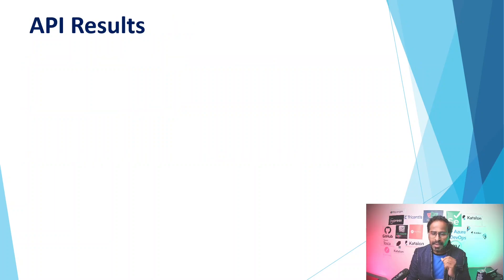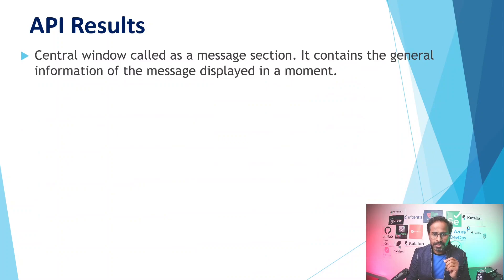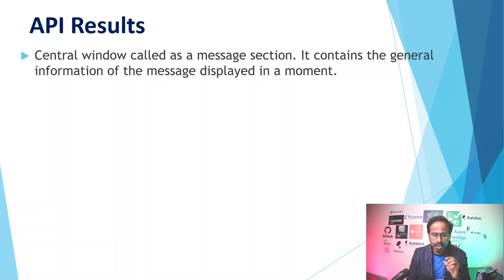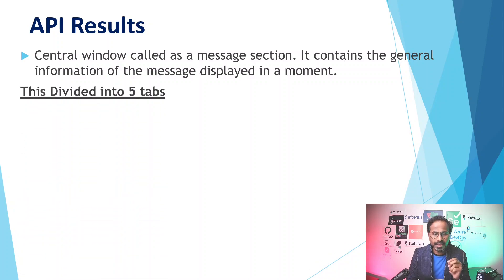API results. The central window is called the message section in Tricentis Tosca tool. It contains the general information of the message, and it is divided into five different tabs.